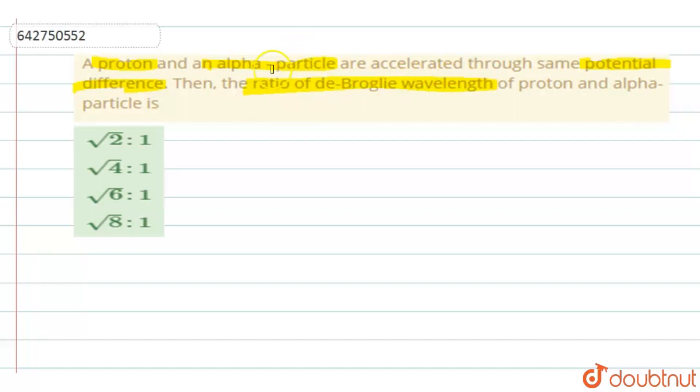So here they are asking you to find out the ratio of the de Broglie wavelength of the proton and an alpha particle. They are saying that they are accelerated to the same potential difference. So for both, Vp and V alpha is same. Both are equal. Vp will be equal to V alpha.